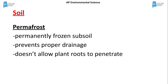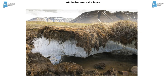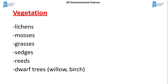The permafrost — permanently frozen subsoil — prevents proper drainage and doesn't allow plant roots to penetrate it. Plant types characteristic of the tundra include lichens, mosses, grasses, sedges, reeds, and a few dwarf trees.